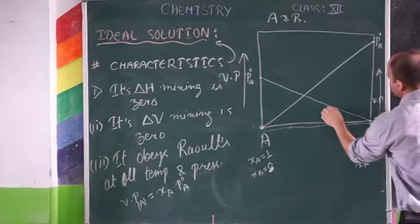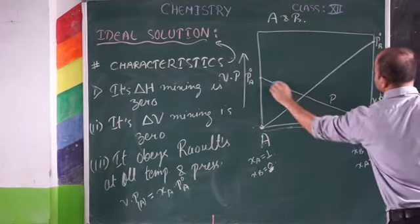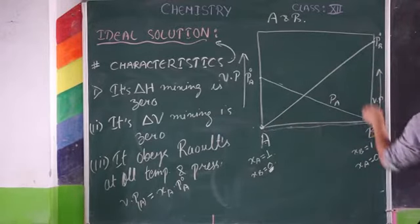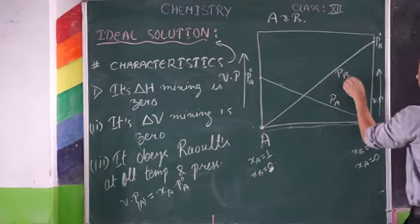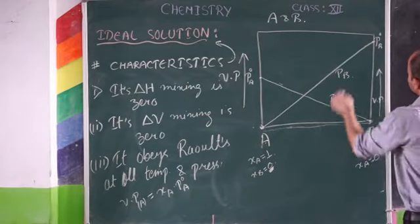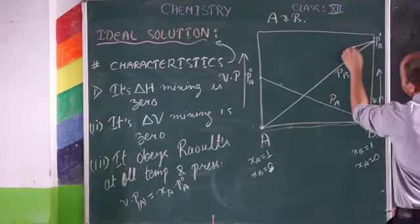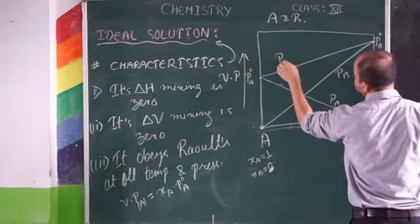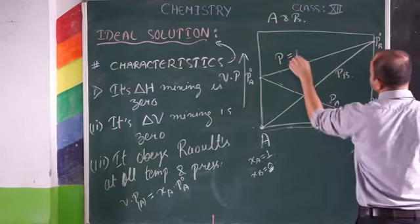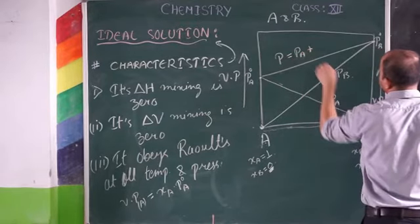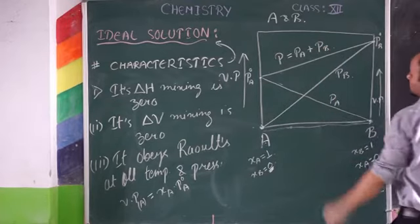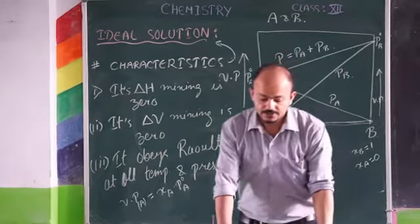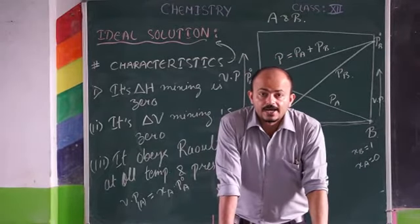The line showing partial pressure of A, and the line showing partial pressure of B are both plotted. The total vapor pressure of the solution equals the partial pressure of A plus the partial pressure of B. This is how you draw these diagrams for an ideal solution.